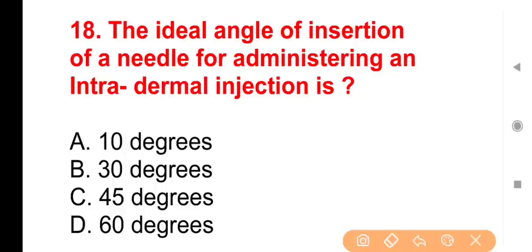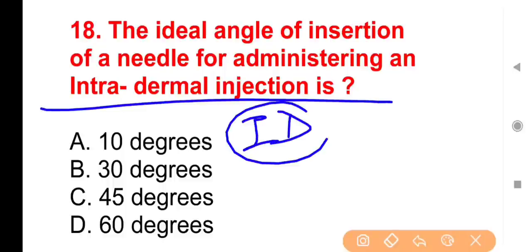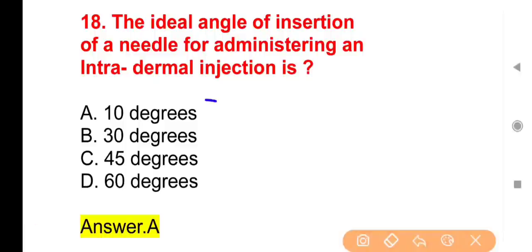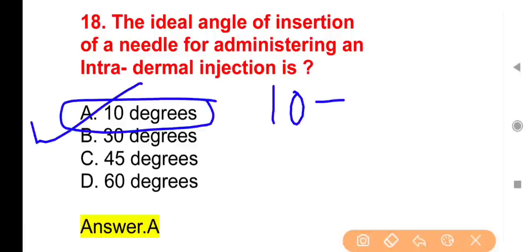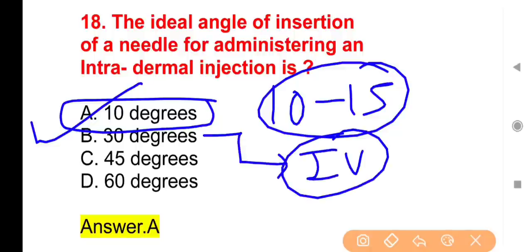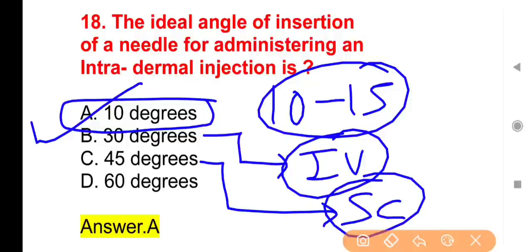Question 18: The ideal angle of needle insertion for an intradermal injection — Options: 10 degrees, 30 degrees, 45 degrees, 60 degrees. The right answer is Option A — 10 to 15 degrees. Intradermal route is generally used for drug sensitivity testing (AST) and BCG vaccine. 30 degrees is for IV injection, 45 degrees for subcutaneous, and 90 degrees for IM injection.